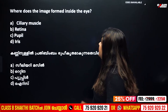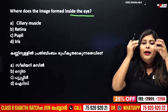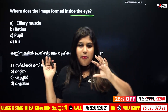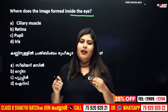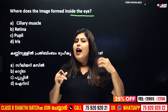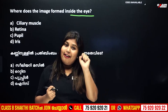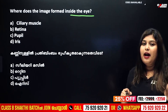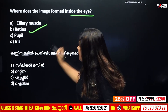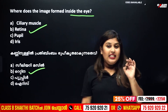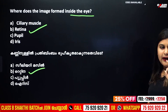Where does the image form inside the eye? We know that our eyes have a lens. There is a convex lens in our eyes. The image forms on the retina. The retina is where the image is formed.